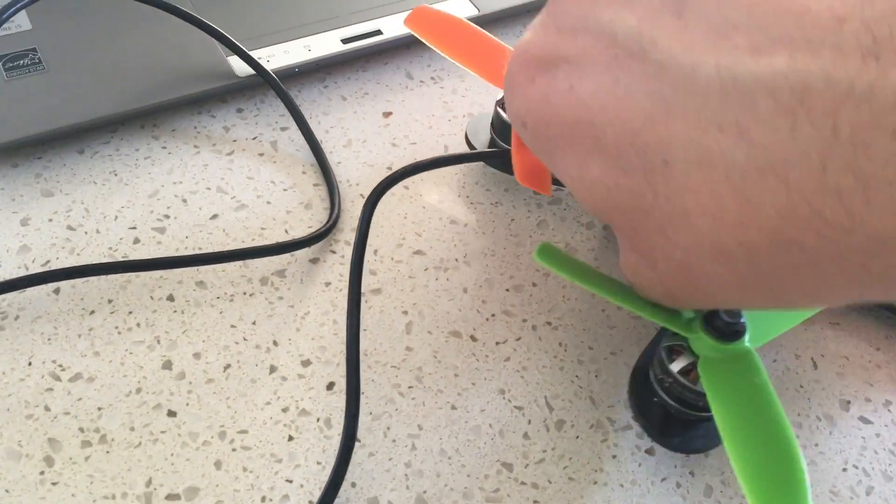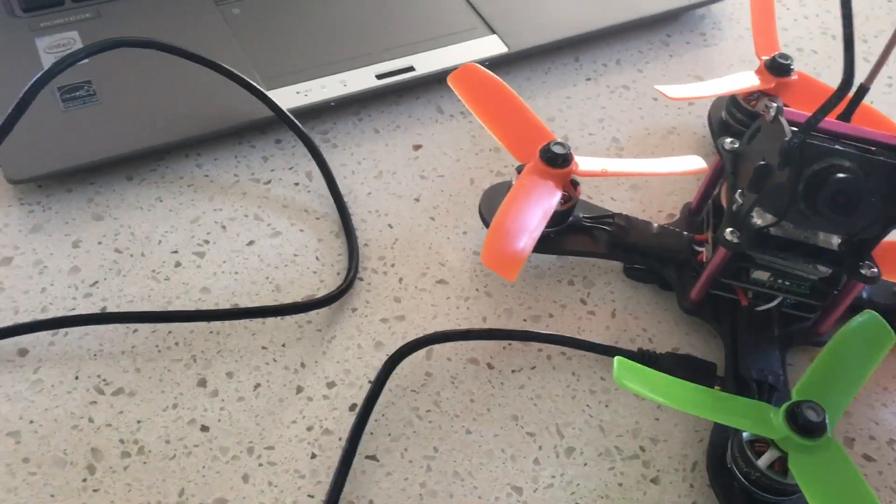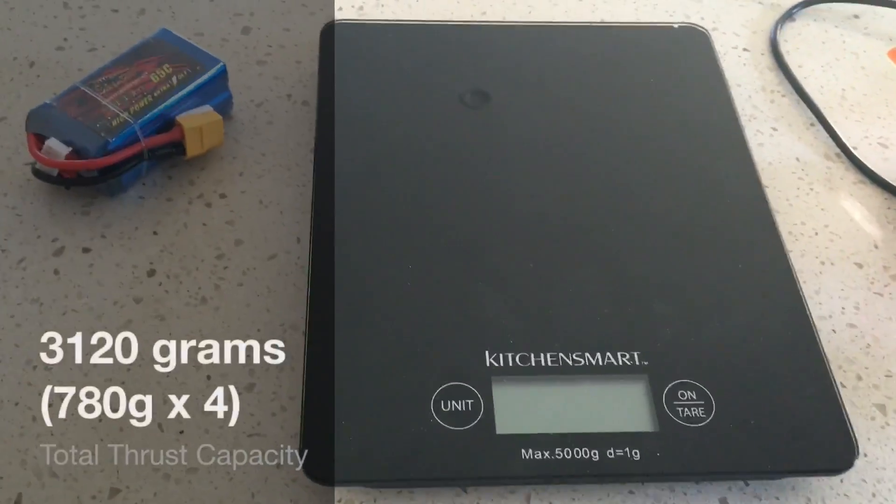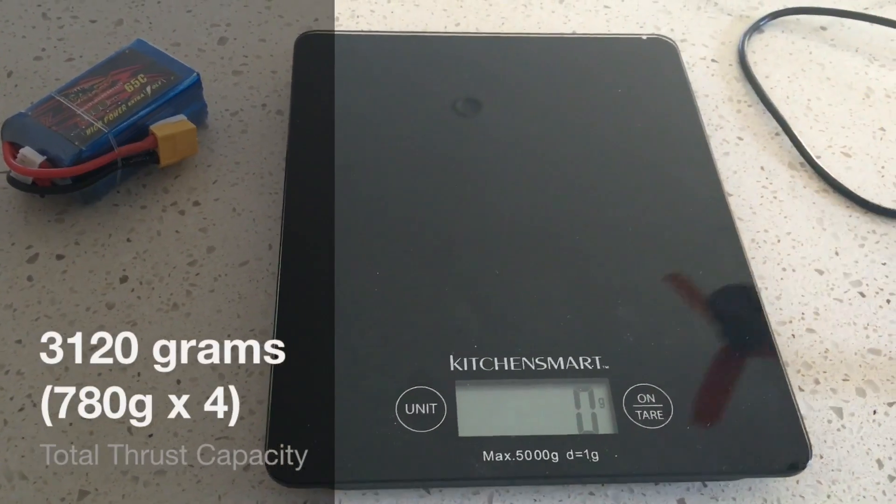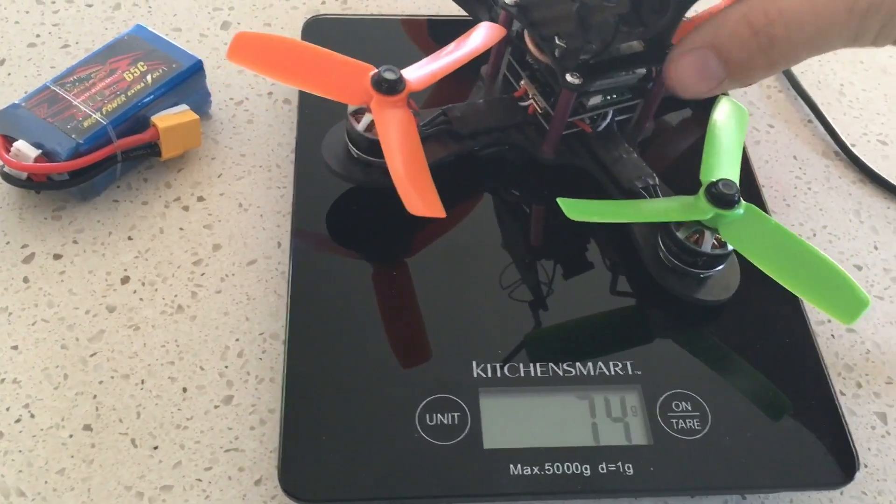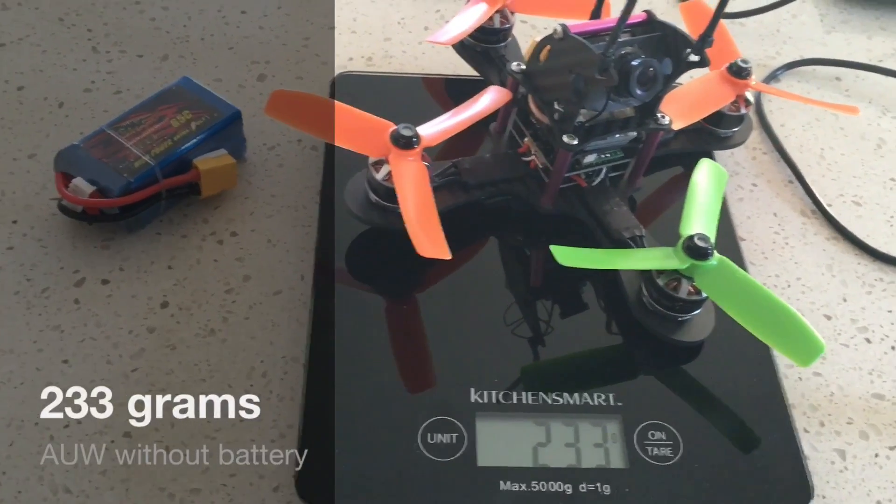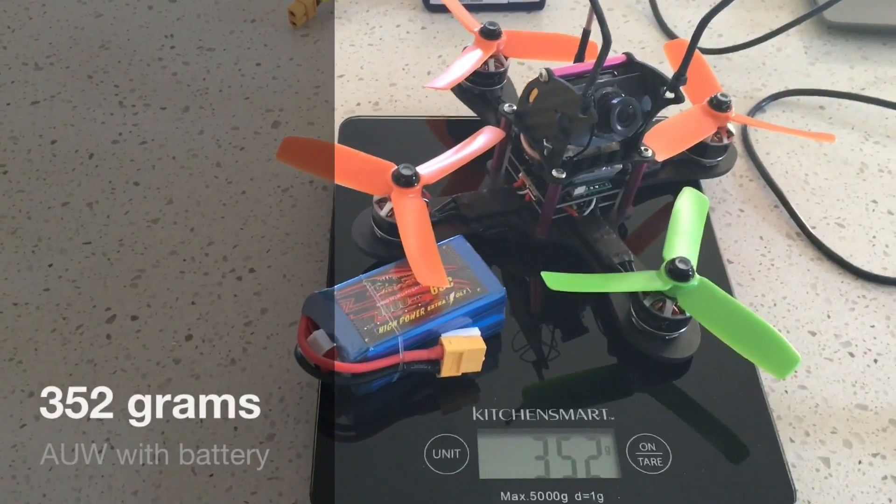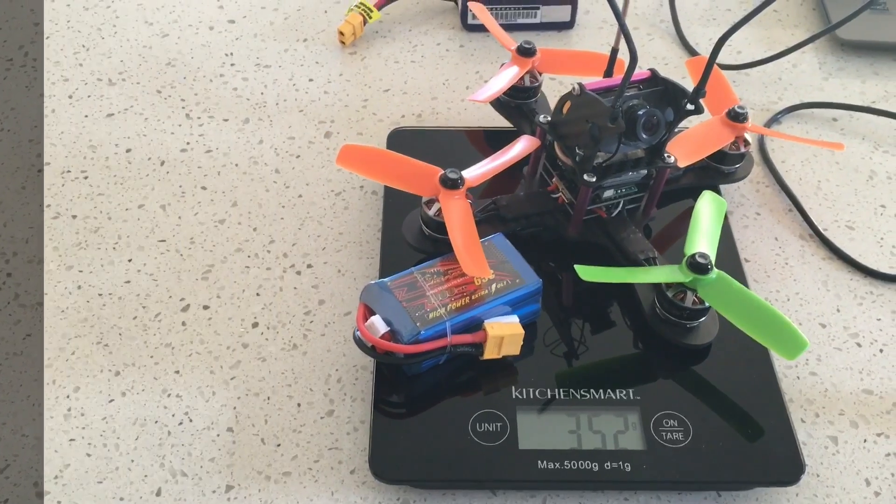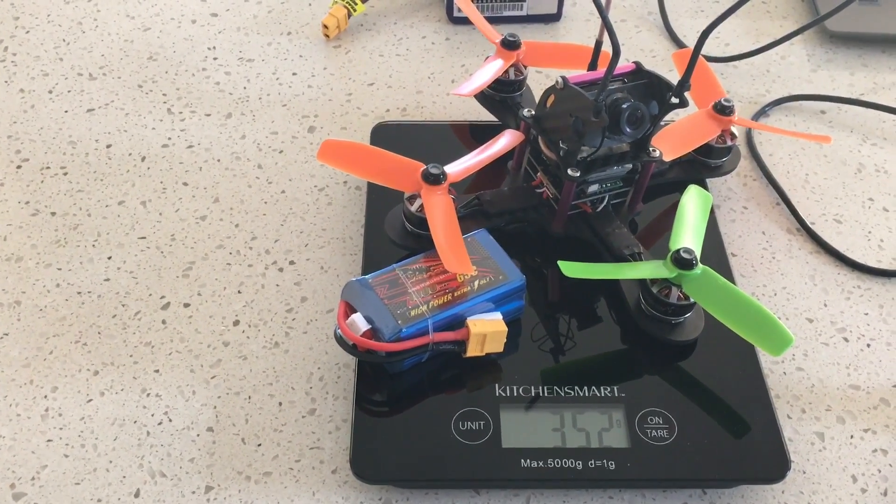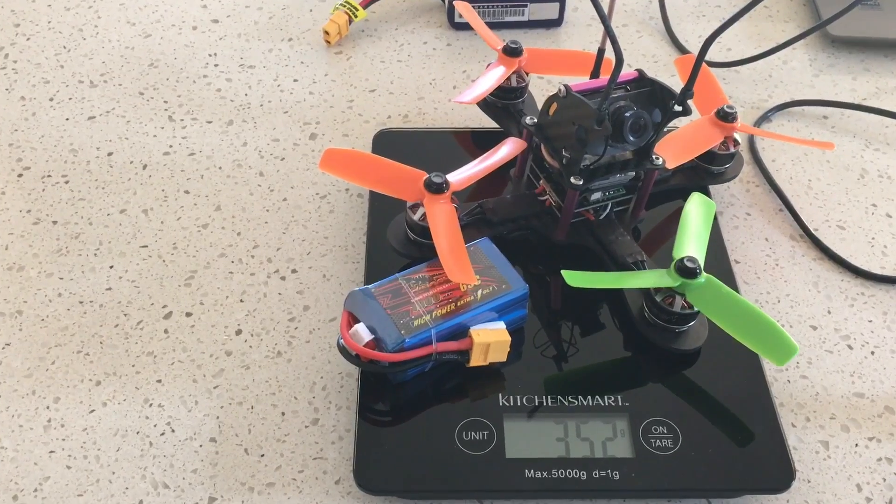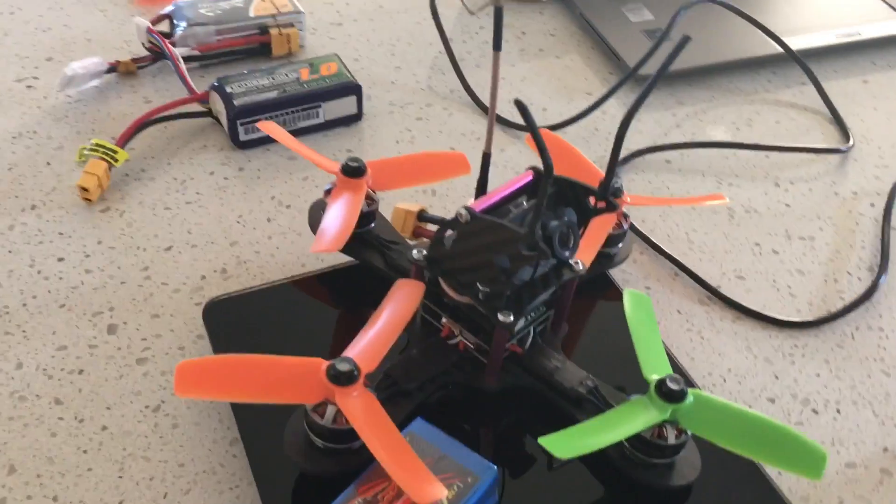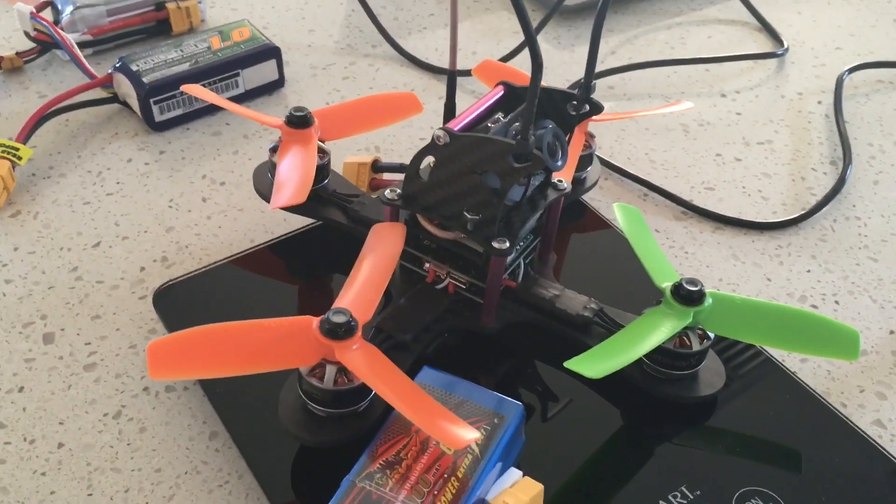So the thrust results for these motor prop ESC combos mean this quad has the capacity for 3,120 grams of thrust and it has an all-up weight of 233 grams without a battery and 352 grams with a battery. So at 350-odd grams versus the 3,120 grams of potential thrust, it has a power to weight ratio of 9 to 1. So anybody that thinks 4-inch quads are boring, I very much doubt this one will be.